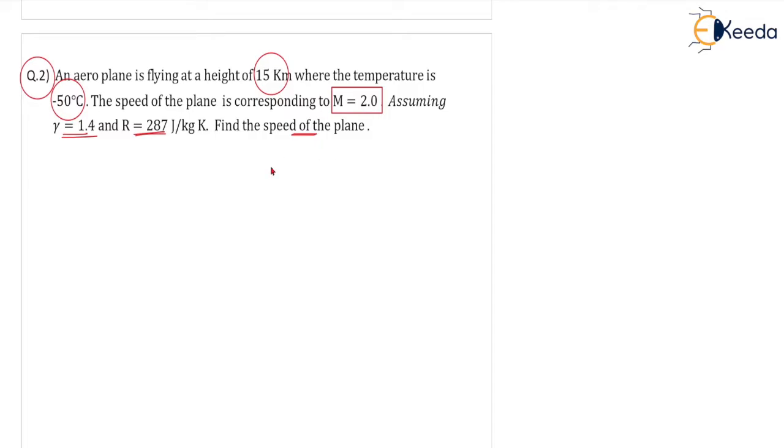First of all we write down the given data. The aeroplane is flying at a height Z equal to 15 km. The temperature T is equal to minus 50 degrees centigrade. Temperature must be converted into kelvin, so minus 50 plus 273 equals 223 kelvin.